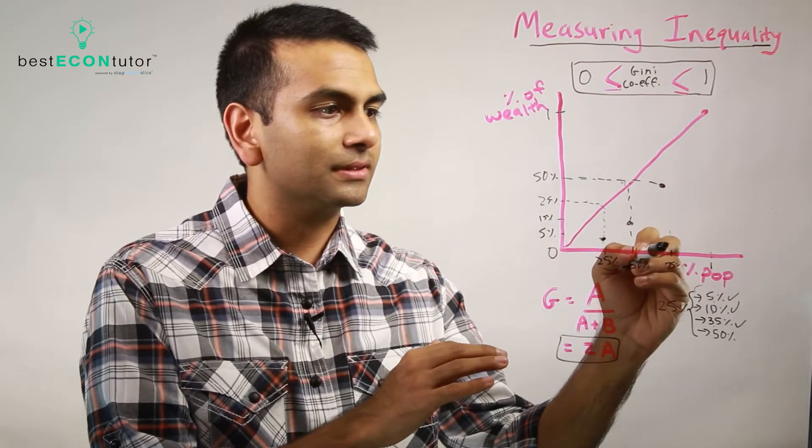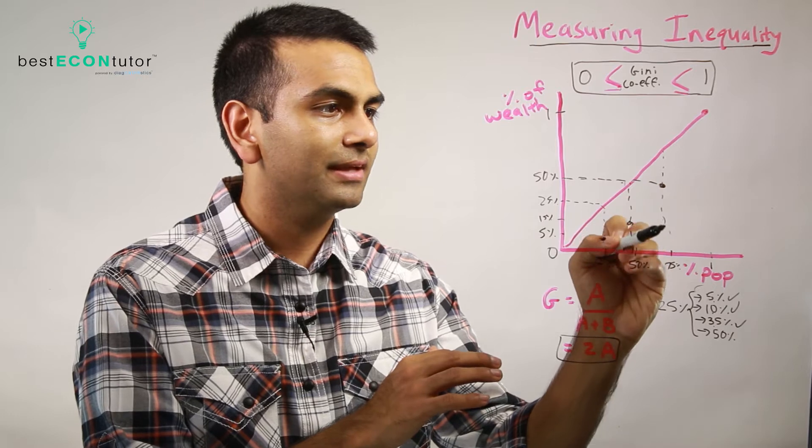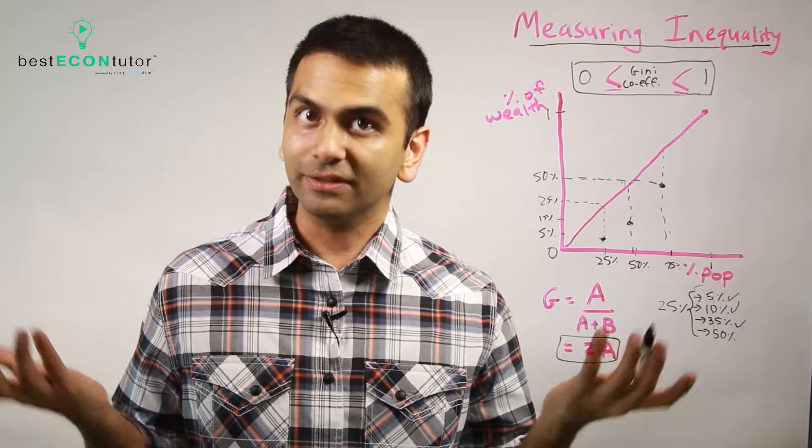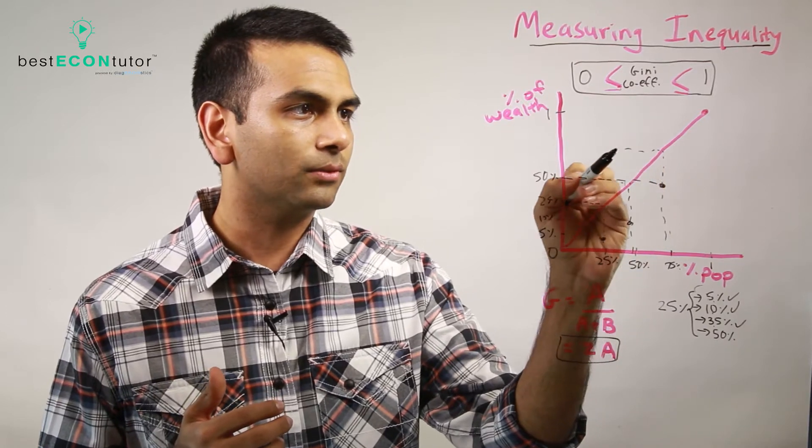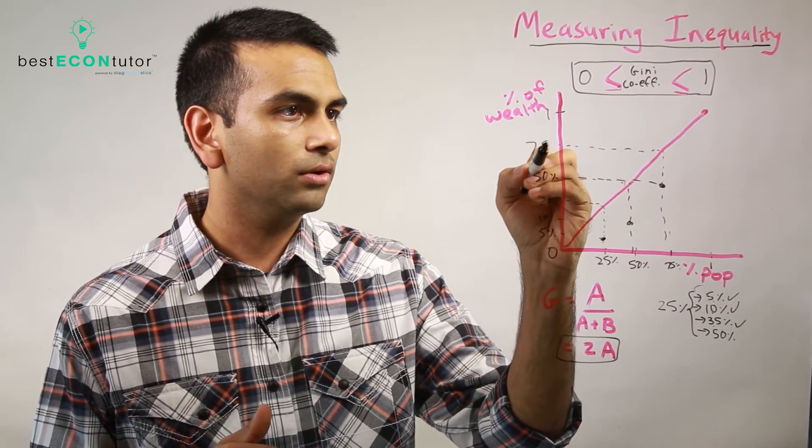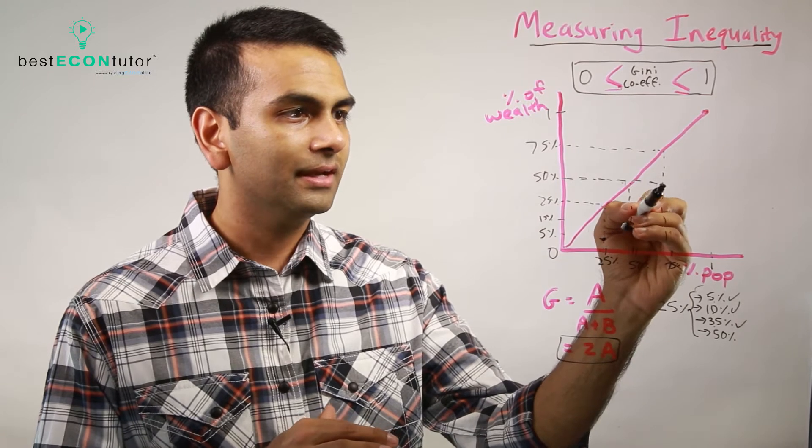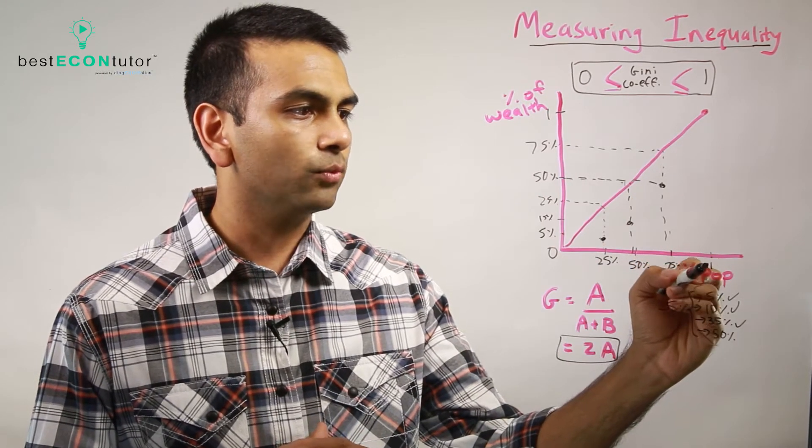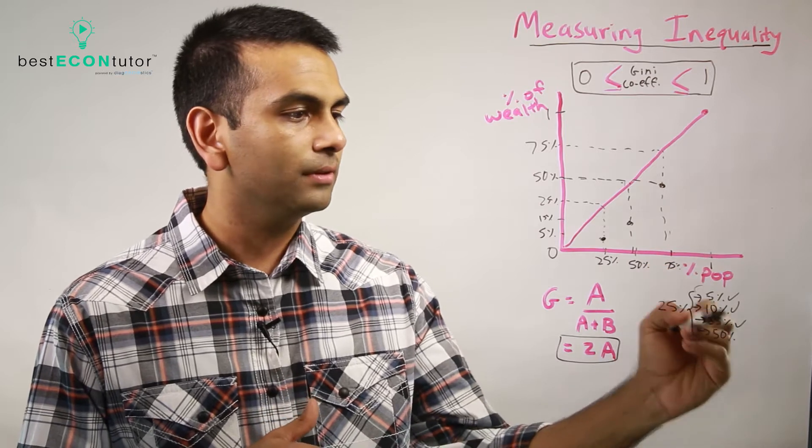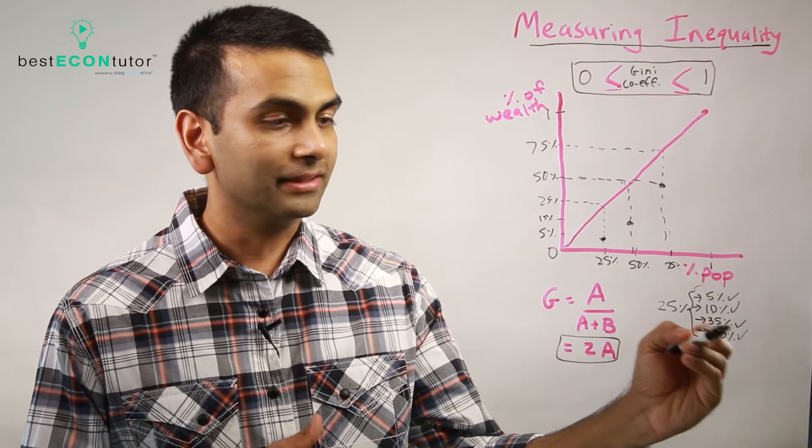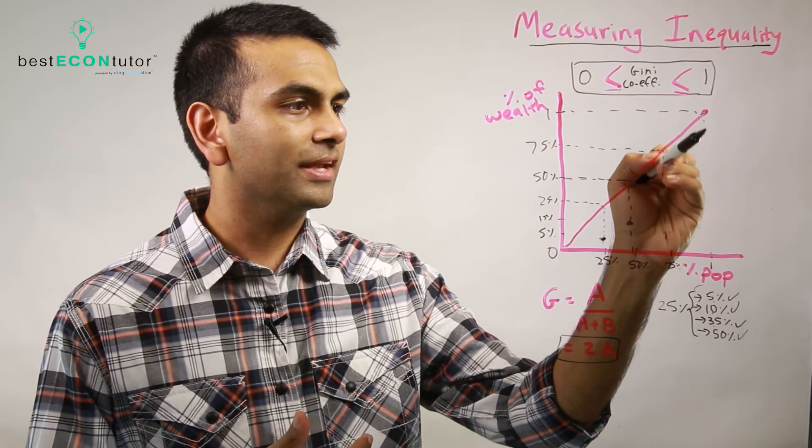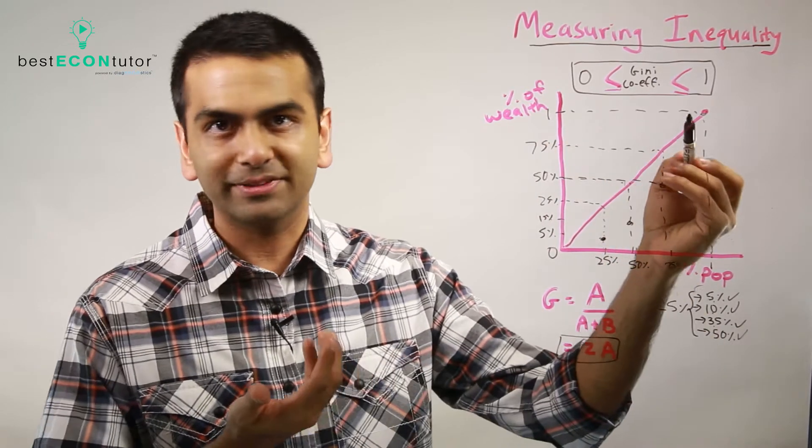Notice, again, still less than what the line of perfect equality would have been. Because, hey, if everyone was equal, the bottom 75% of people would have 75% of the wealth. So again, that's what the red line is telling us. But again, that's not the case in this society. The bottom 75% have 50% of the wealth. And then, finally, when we get to the full one, meaning 100% of people, that's adding this other 50%. That's 100% of the wealth.